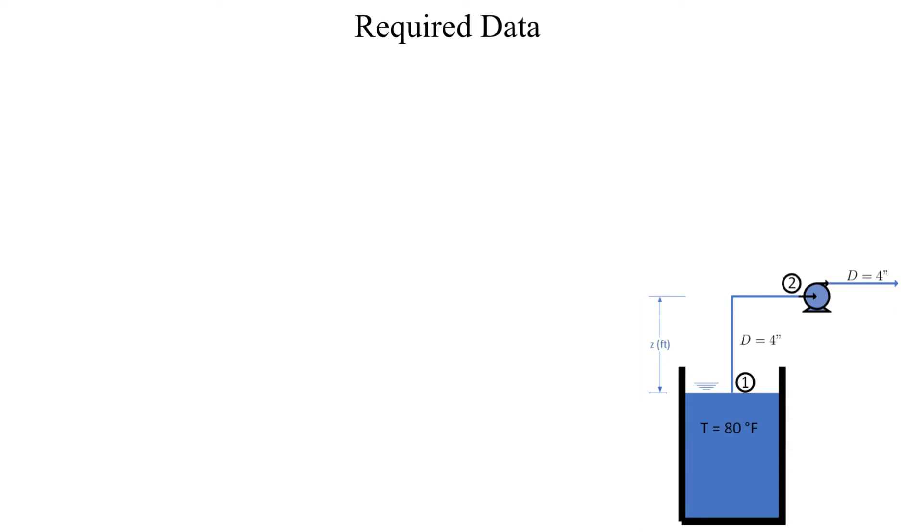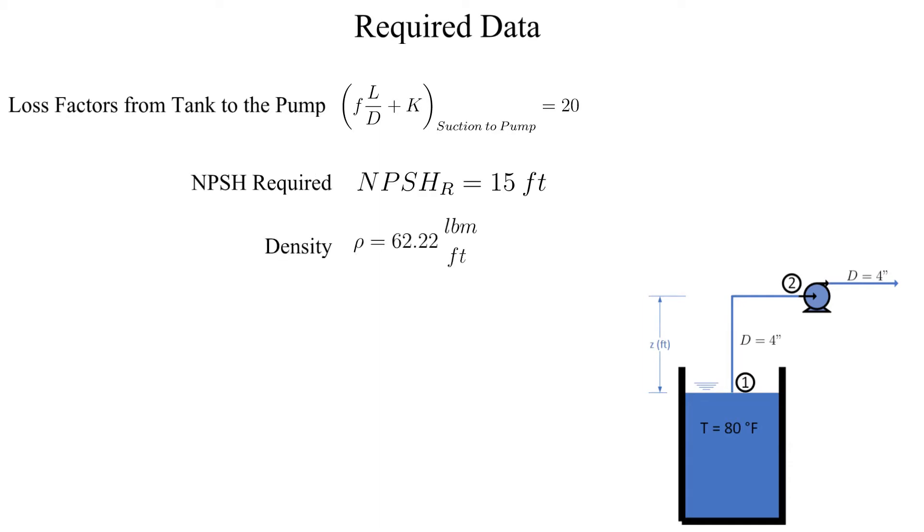Listed is the data required for this example including the major and minor losses for the pump suction piping, net positive suction head required, the density, and the vapor pressure.